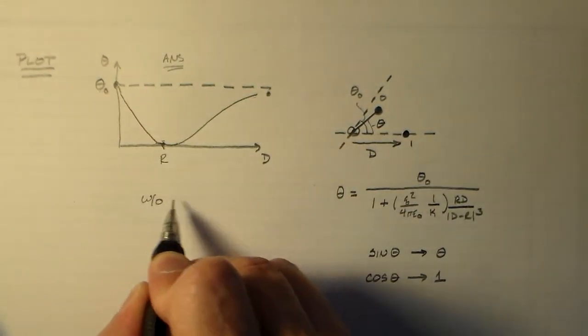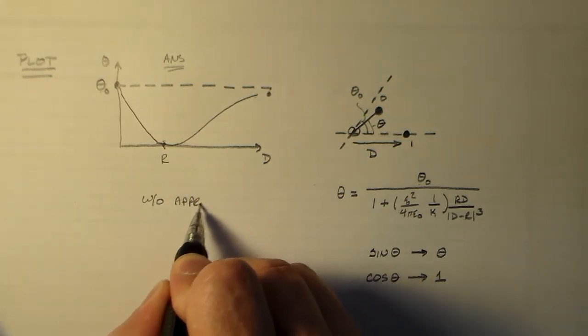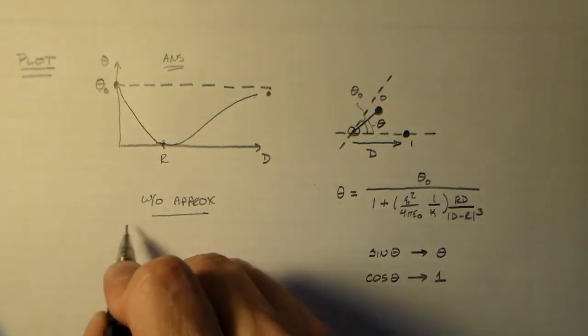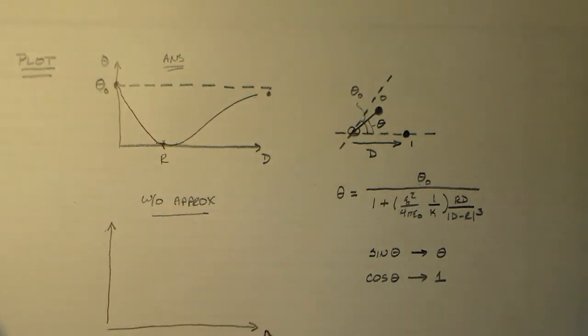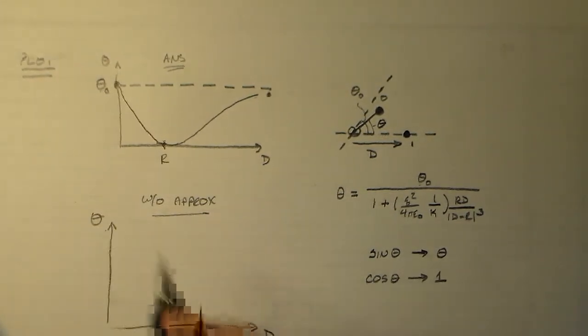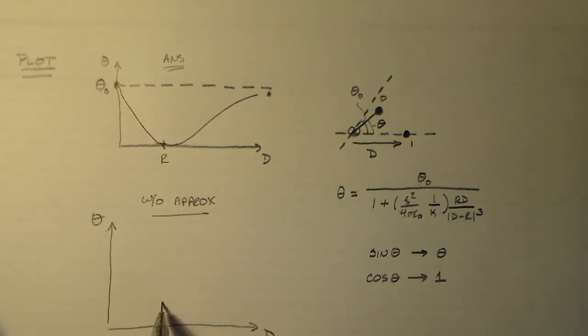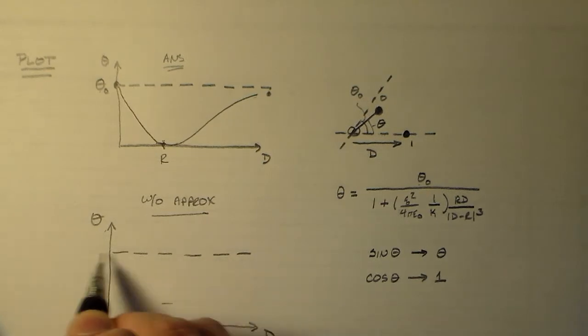But if you want to look at it without the approximation, then it'll do something like that. At r, it'll come down to here. And so that's all right.